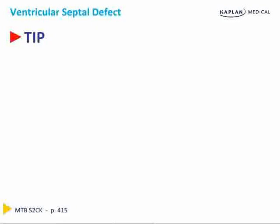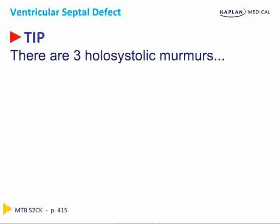This child has a ventricular septal defect — a VSD. Here are some tips to commit to memory to help you get this diagnosis quickly. There are three holosystolic (pansystolic) murmurs: mitral regurgitation, tricuspid regurgitation, and ventricular septal defect. The patient in our case has a loud pansystolic murmur, which should immediately trigger this list. Pansystolic murmur — think mitral regurgitation, tricuspid regurgitation, and VSD.